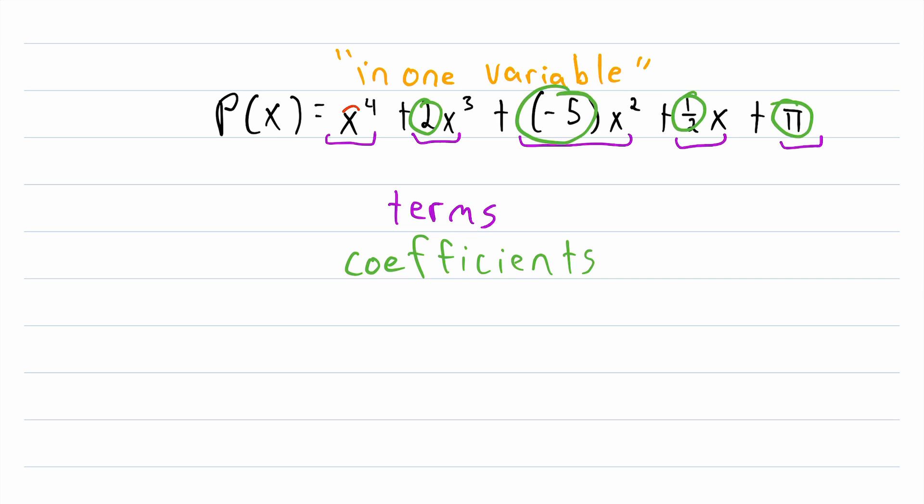Then of course, we also have the variables of the polynomial. It's pretty common for a polynomial to have only one variable, like our polynomial P. These sorts of polynomials are really useful for modeling all sorts of different situations, but polynomials can also have multiple variables, and you might see such polynomials sometime.